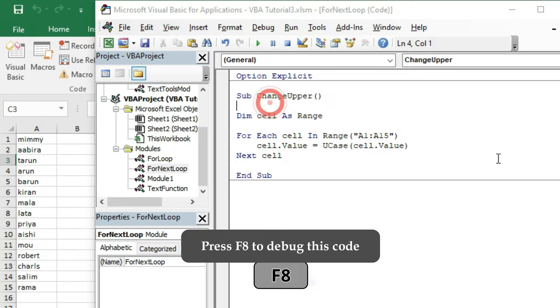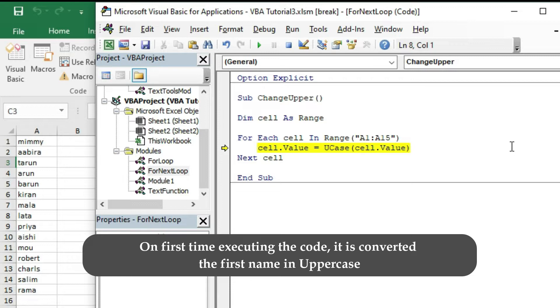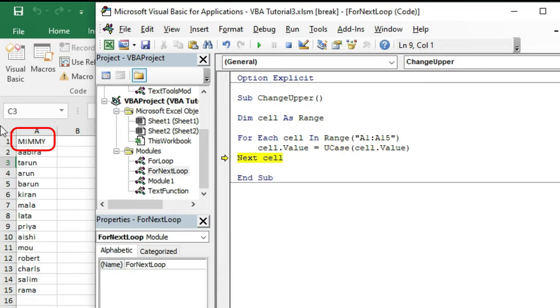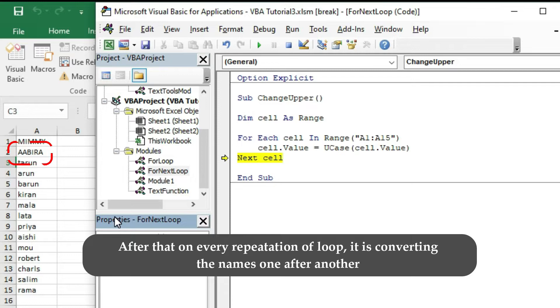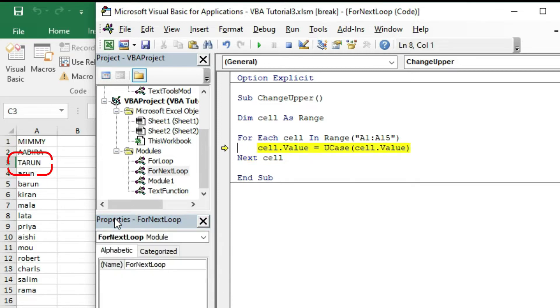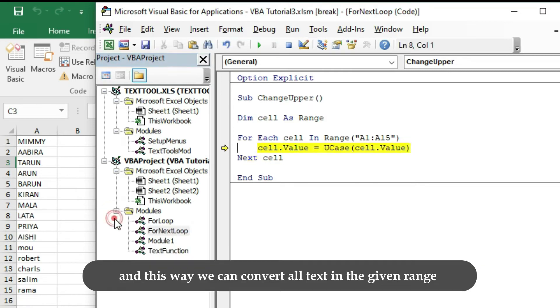Press F8 to debug this code. On first time executing the code, it has converted the first name in uppercase. After that, every repetition of the loop, it is converting the names one after another. The code stops after executing cell A15.